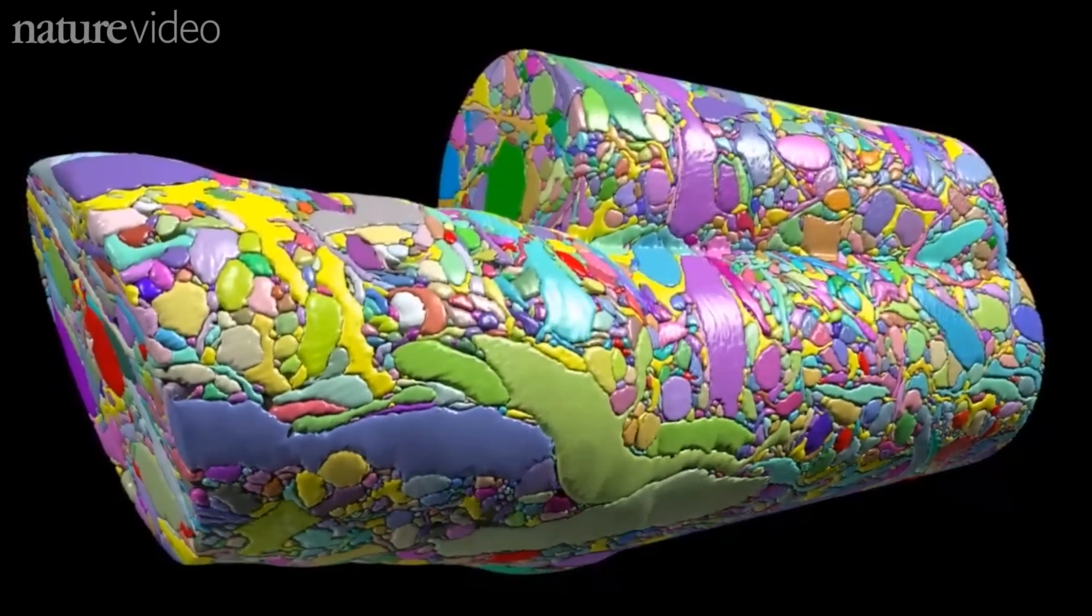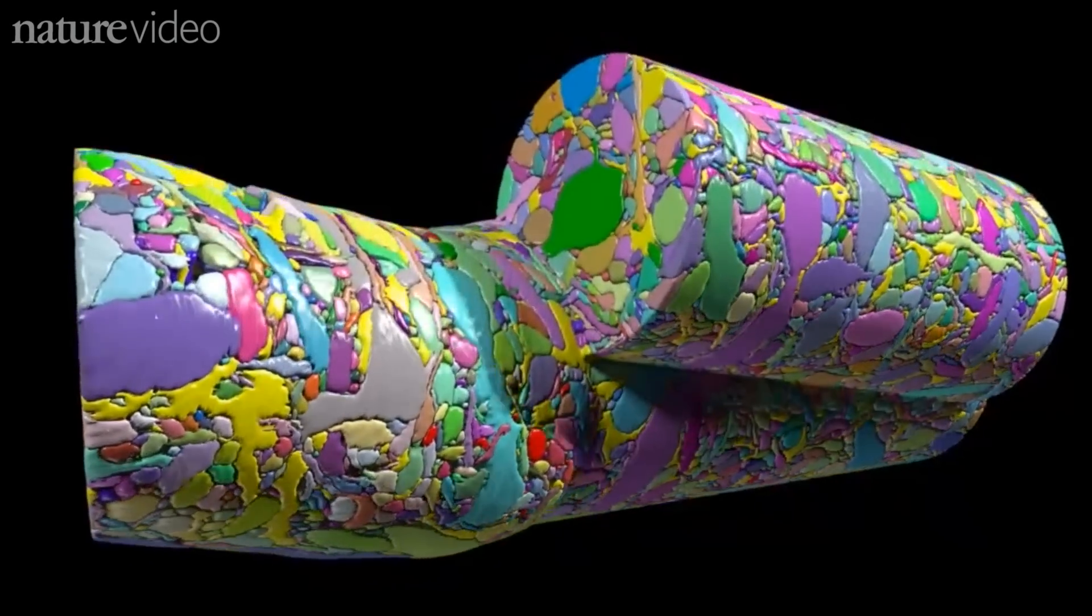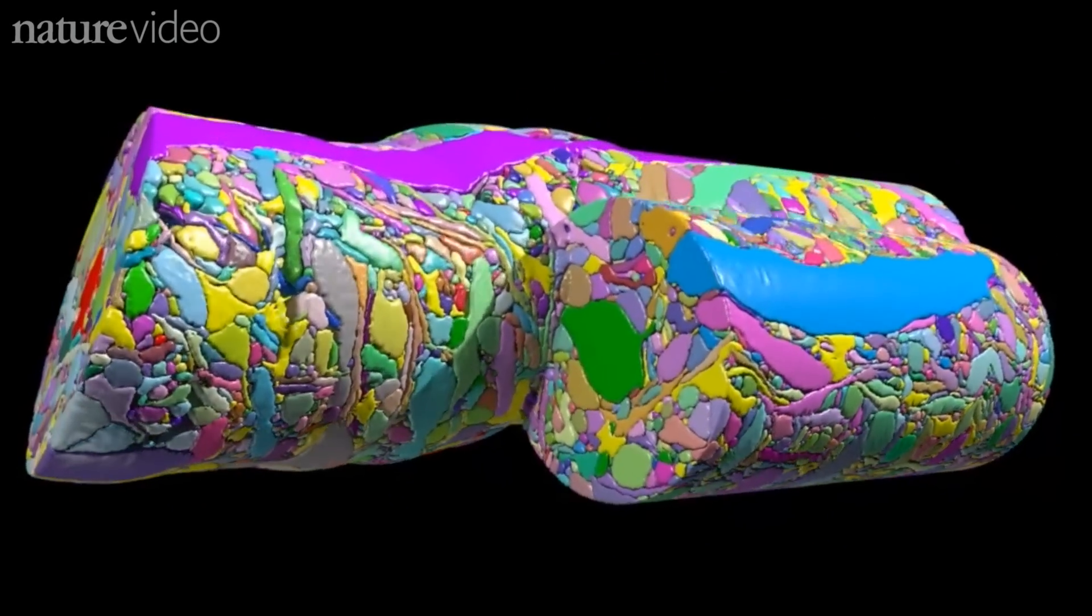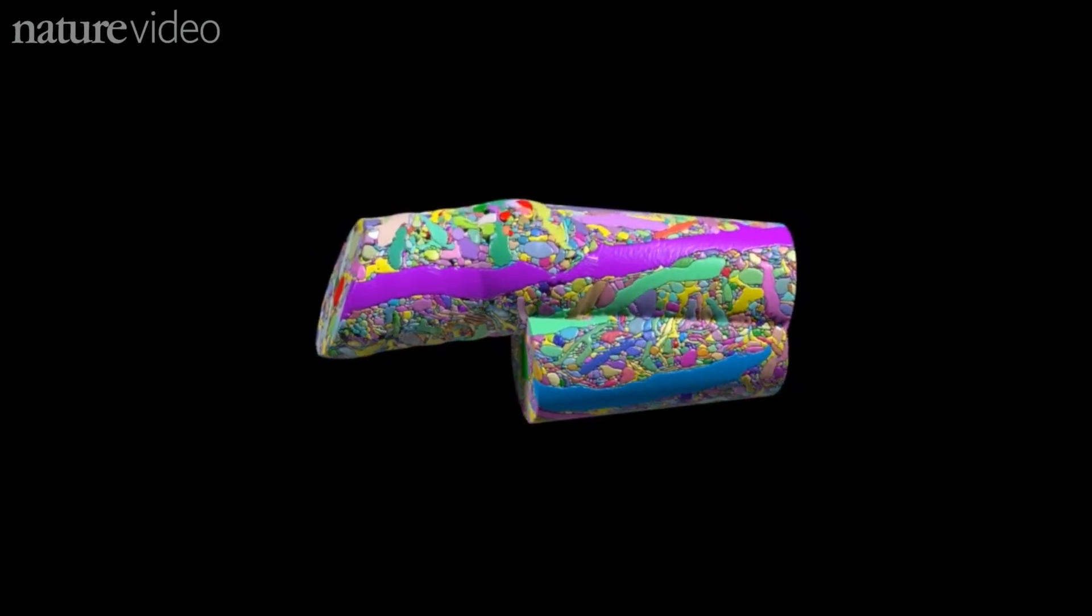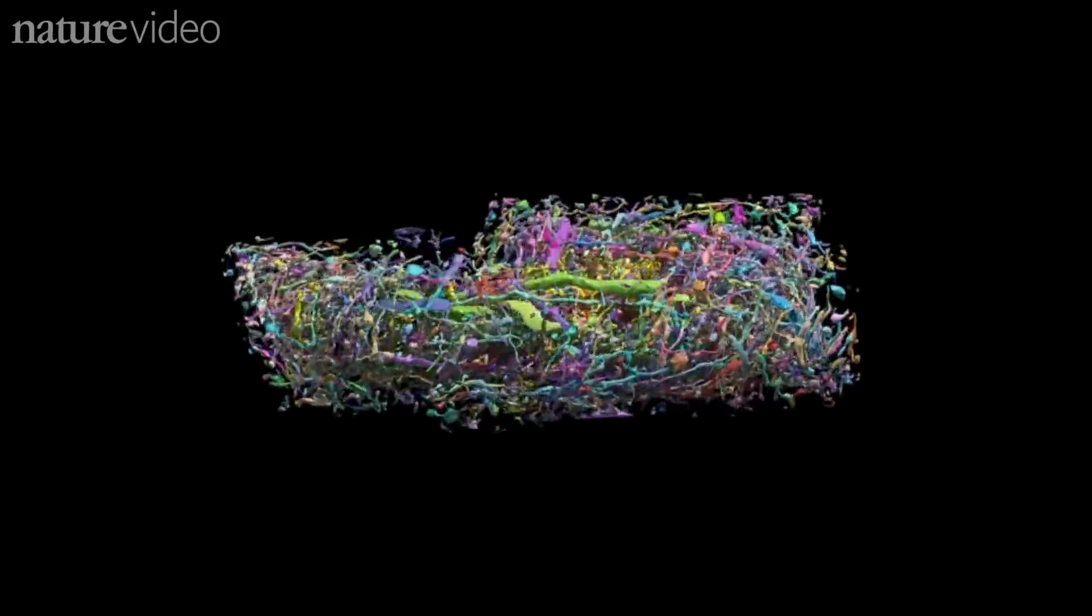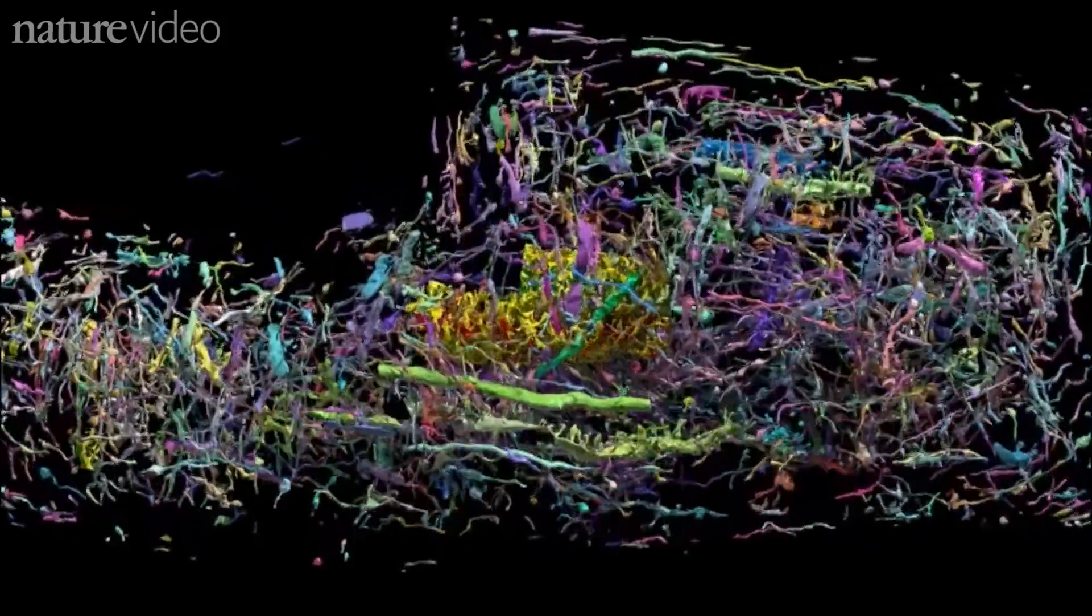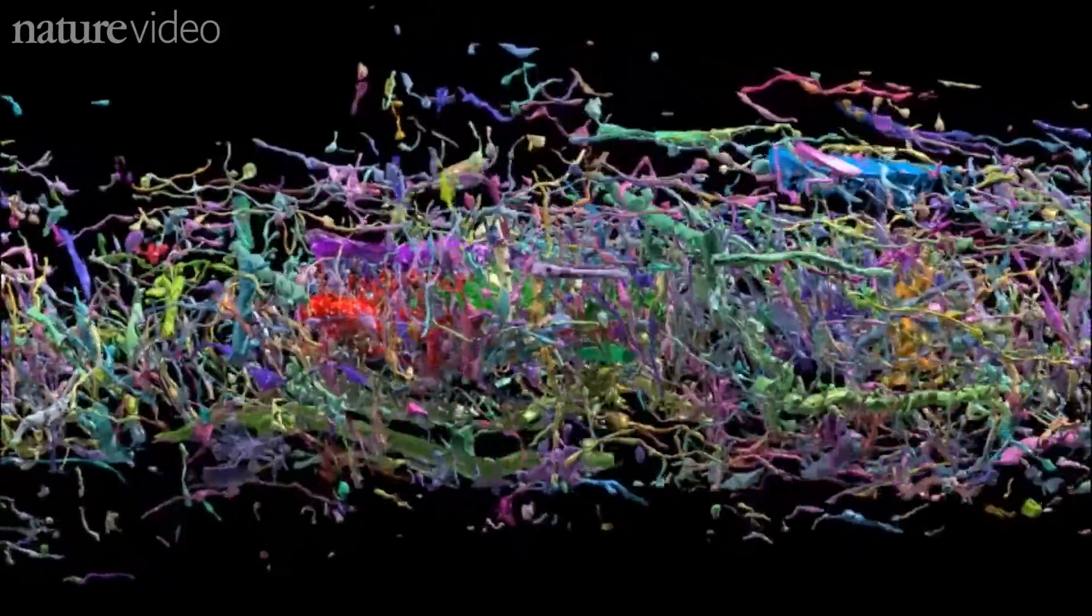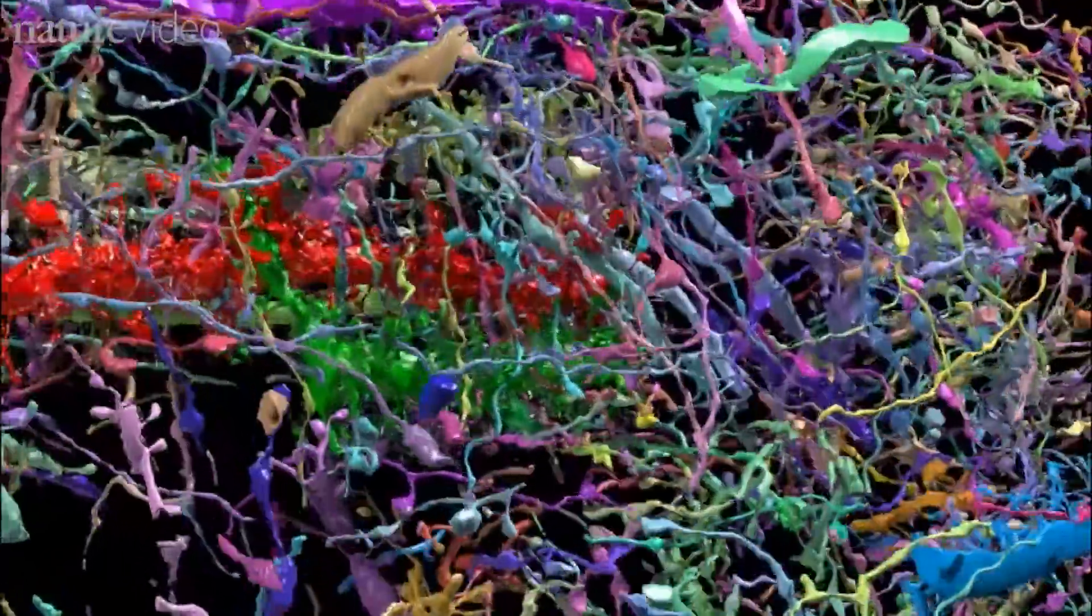This colourful cylinder is a piece of mouse brain. A very small piece. It's two hundredths of a millimetre long. It may be small, but it's a really complete inventory. Unlike previous efforts to map the brain, it contains all the cell types in this area, not just the neurons.